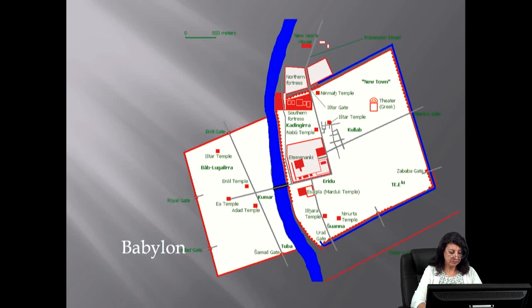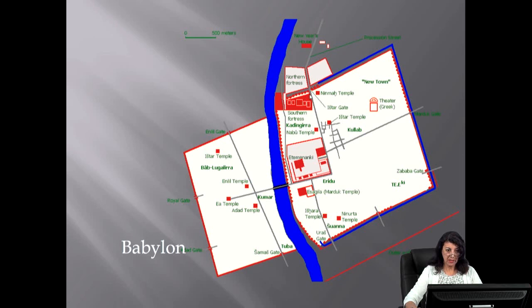Nebuchadnezzar II paved the processional road of Babylon — which can be seen here on the map — from outside the city through the Ishtar Gate to the temple of Marduk. Here is the Ishtar Gate, and the processional road, and here the Marduk temple. He also adorned its flanking walls with clay ceramics with reliefs.